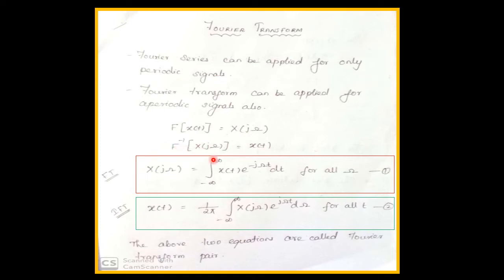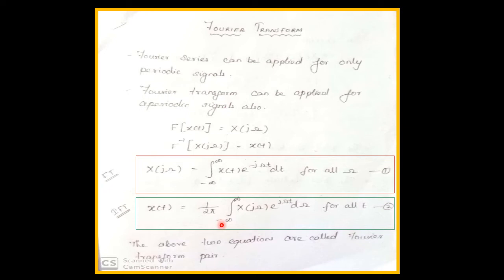The inverse Fourier transform of X(jω) is equal to x(t). The Fourier transform formula is: X(jω) = integral from minus infinity to infinity of x(t) e^(−jωt) dt, for all ω. The inverse Fourier transform is: x(t) = (1/2π) integral from minus infinity to infinity of X(jω) e^(jωt) dω. These two equations are called Fourier transform pairs.